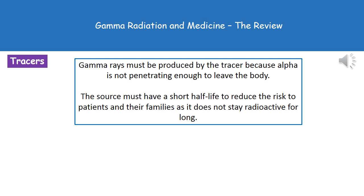Finally, we need to consider why we use gamma rays for tracers. The key thing is to do with the amount of penetration. Gamma rays are penetrating enough to cross from inside the body to the detector. However, if we were to use something like an alpha particle, it's not penetrating enough to leave the body, so there's no point in using alpha as a tracer because it would never be picked up by our detector. The other thing to consider is that whatever source we use must have a short half-life — we don't want this radiation to persist inside the body for a long period of time.